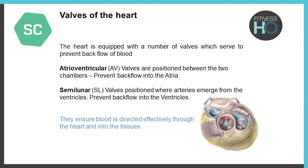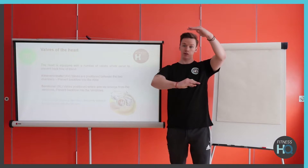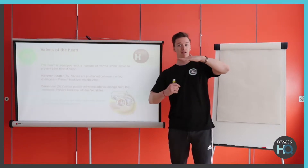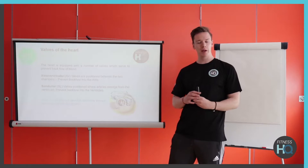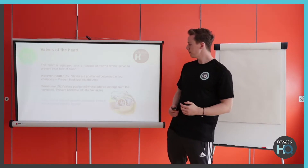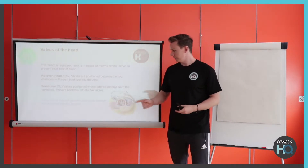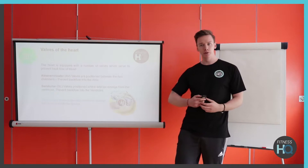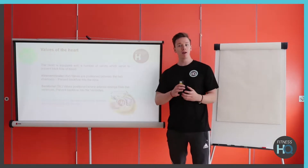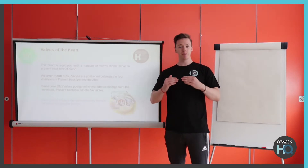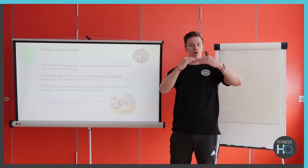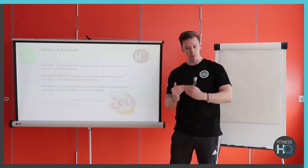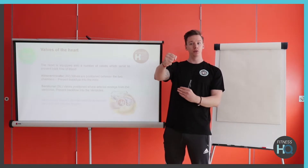The atrioventricular, or AV valve — if you think about the atrium and the ventricle — it's the valve in between. It's got a complicated name but it breaks down quite easily. Its position is between the two chambers, and its main purpose is to prevent backflow from the ventricle back up into the atrium. So once that blood pumps down, the valve shuts.